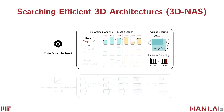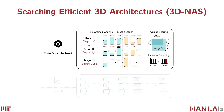We further support elastic network depths via progressive depth shrinkage. We divide supernetwork training into 3 segments. In the first segment, the depths of each stage can only be 3. In the second segment, we allow the depths of each stage to be 2 or 3. In the final segment, the number of blocks per stage can be 1, 2, or 3. As such, we support arbitrary network depth configurations in the 3D NAS supernetwork.